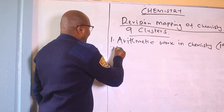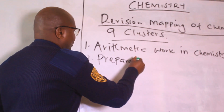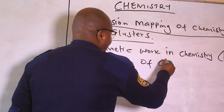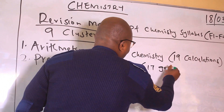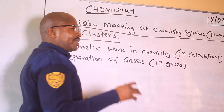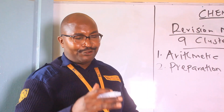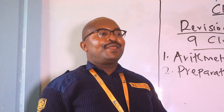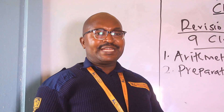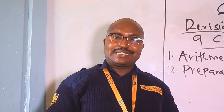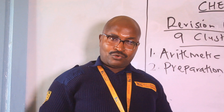The second cluster is preparation of gases. We have only 17 gases that are standard under the chemistry syllabus, that is from Form 1 to Form 3. In Form 1, you are taught about preparation of oxygen and also hydrogen — those are 2 gases taught in Form 1. Then Form 2: preparation of carbon dioxide and carbon monoxide.